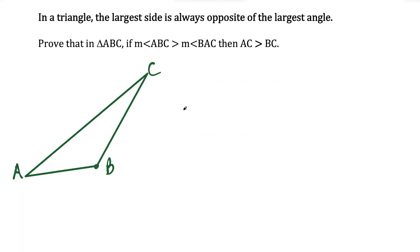Now I'm going to prove the converse: in a triangle, the largest side is always opposite of the largest angle. I'm going to prove that in triangle ABC, if the measure of angle ABC is greater than the measure of angle BAC, then AC — the side opposite of the big angle — is greater than side BC. To do this, I'm going to draw a line segment from point B and connect it to side AC such that the angle formed equals angle BAC, calling the contact point D.